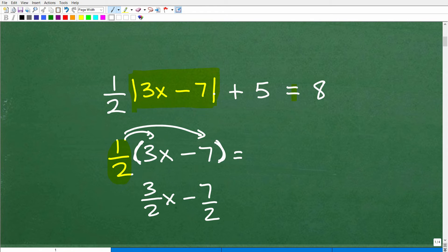However, parentheses, okay, and absolute value functions are entirely different things. You cannot distribute this number to the inside of what's inside the absolute value function.